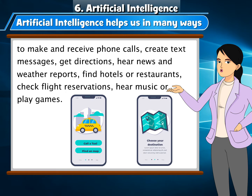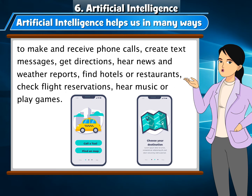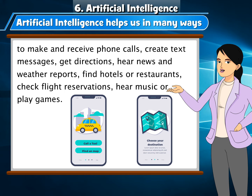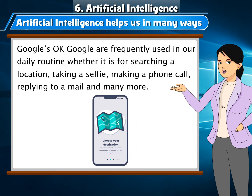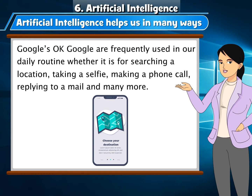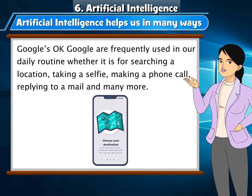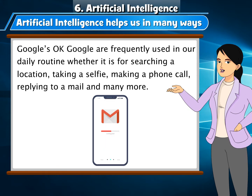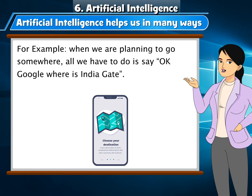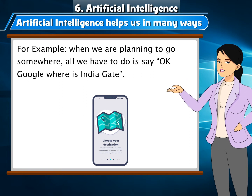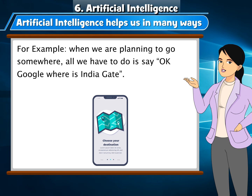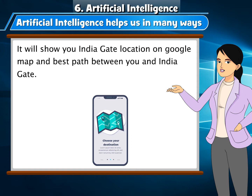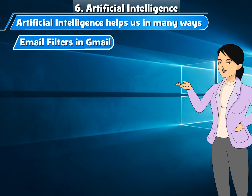Digital assistants can also make and receive phone calls, create text messages, get directions, hear news and weather reports, find hotels or restaurants, check flight reservations, and hear music or play games. Google's OK Google is frequently used in our daily routine — for searching a location, taking a selfie, making a phone call, replying to a mail, and more. For example, when planning to go somewhere, you say 'OK Google, where is India Gate?' and it will show the location on Google Maps along with the best path.